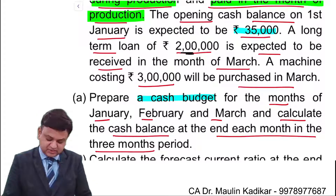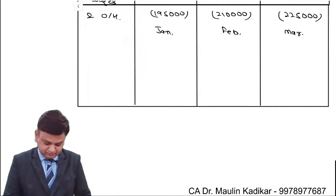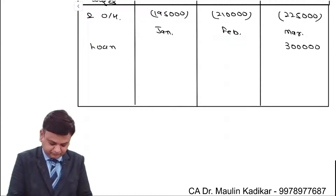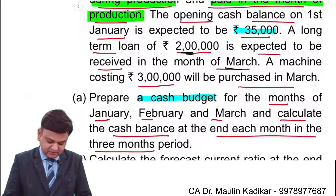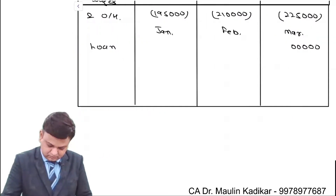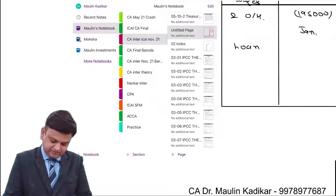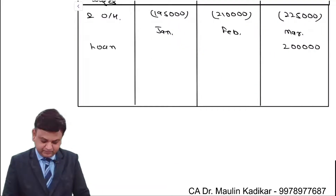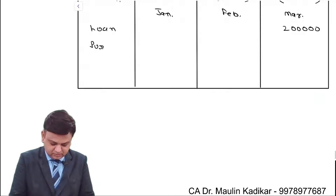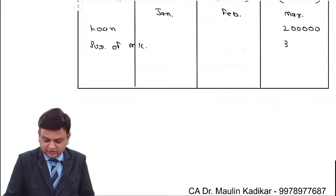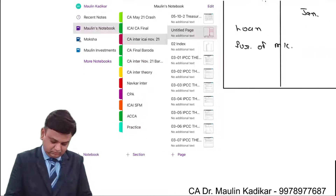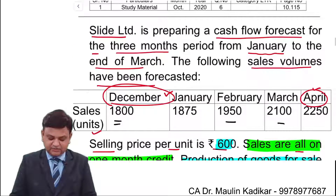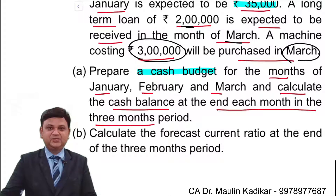A long-term loan of 2 lakhs is expected to be received in the month of March. Also, a machinery costing 3 lakhs will be purchased in the month of March. With all this information considered, we now just have to do the totaling in order to compute the closing balance on a monthly basis.